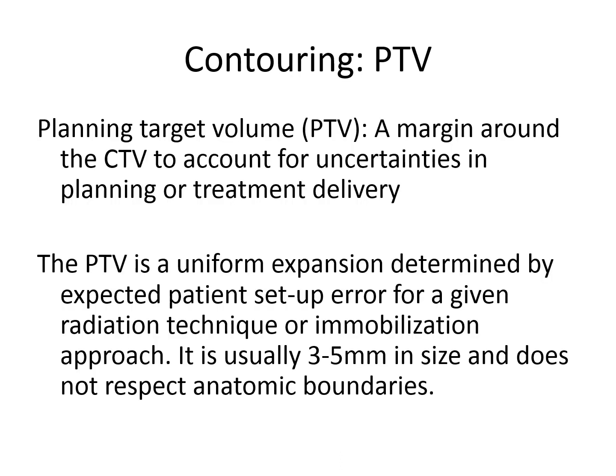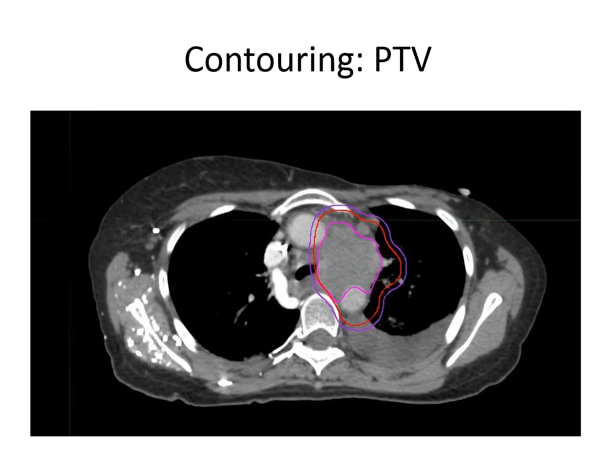Finally, the PTV, or planning target volume, is a margin applied around the CTV to account for uncertainties in planning or treatment delivery. Unlike the CTV or ITV, the PTV is a uniform expansion determined by expected patient setup error for a given radiation technique or immobilization approach. It is typically 3 to 5 millimeters in size and does not respect anatomic boundaries. On this image, the PTV is highlighted in purple and represents a uniform expansion around the CTV or ITV.